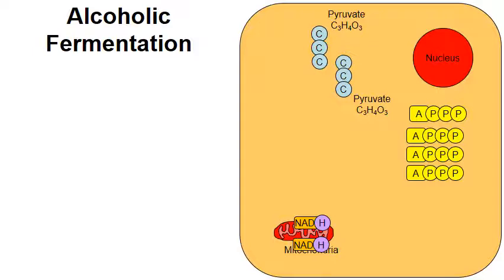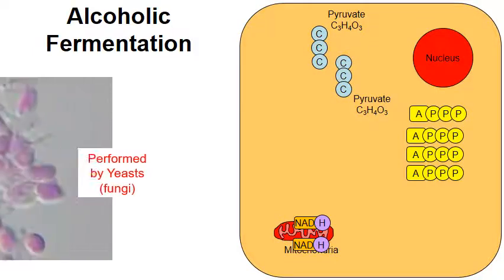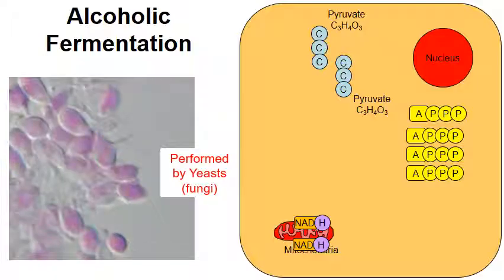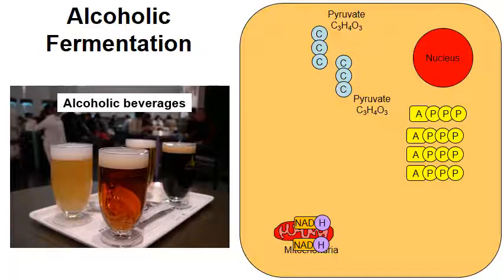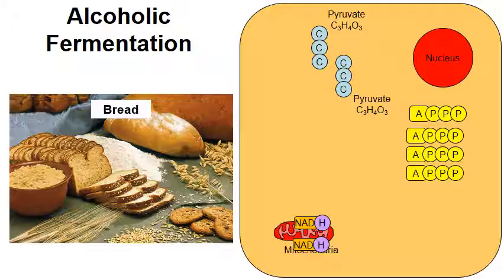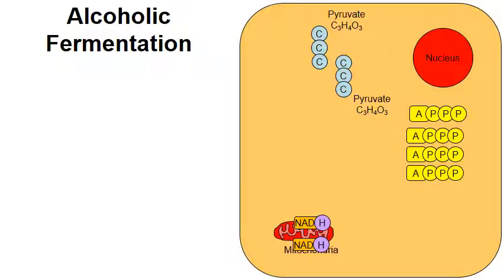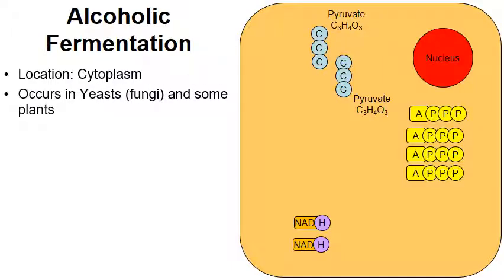As we shift focus to the other kind of fermentation — alcoholic fermentation — this is the fermentation generally performed by yeasts, which are a type of fungus. They're responsible for the production of alcoholic beverages and for the production of most bread. Sourdough is produced by lactic acid fermentation, but most other breads are produced through yeast and the actions of alcoholic fermentation. This process occurs in the cytoplasm, and because the mitochondria is not involved it's removed from the animation. It occurs in yeasts and even some plants.